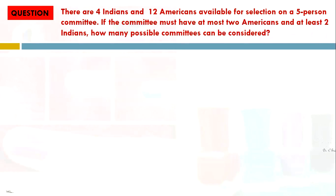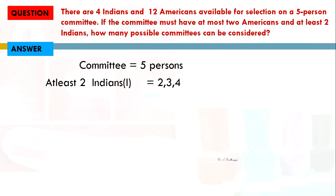Let us see the possible cases. At least two Indians means we can take 2, 3, or 4 Indians from the four available. At most two Americans means we can take 0, 1, or at most 2 Americans from the twelve available. These are the possible combinations.